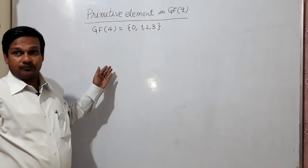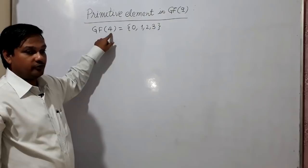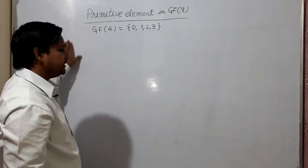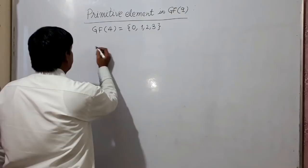Whatever we discussed earlier — those were prime numbers, whether 2, 3, 5, or 7 — these were prime numbers. But 4 is not a prime number; it is a composite number. So we cannot take its multiplicative and additive tables directly.